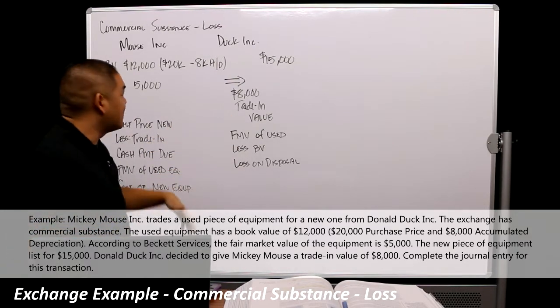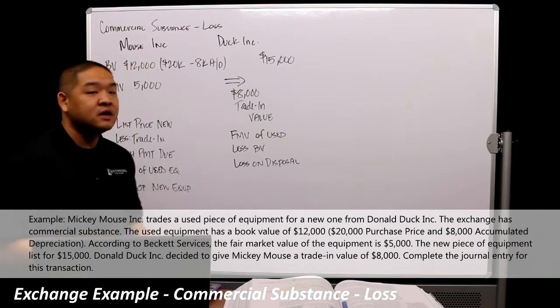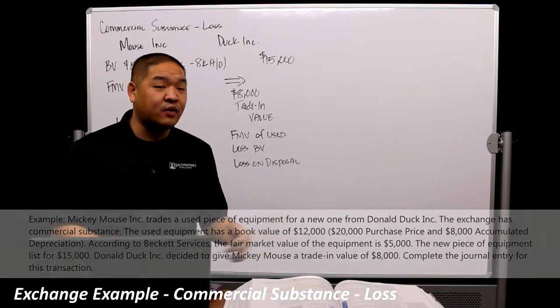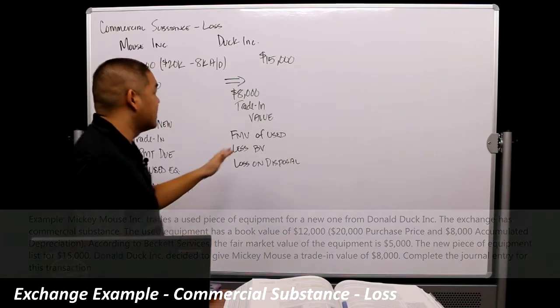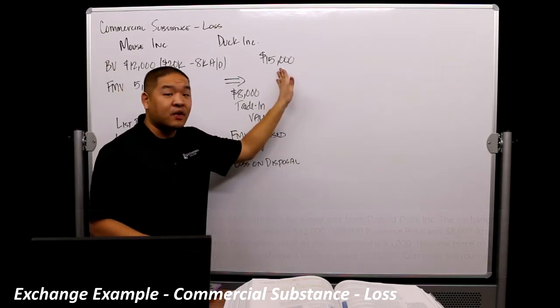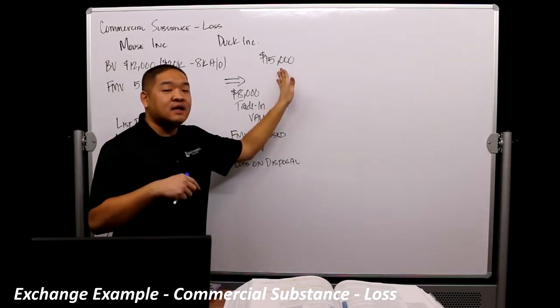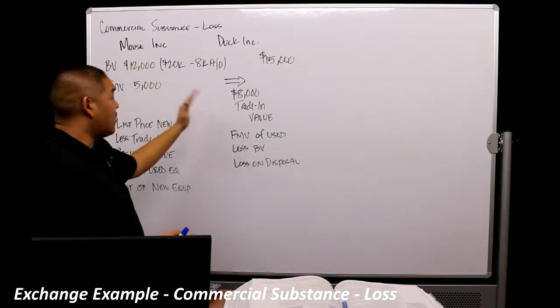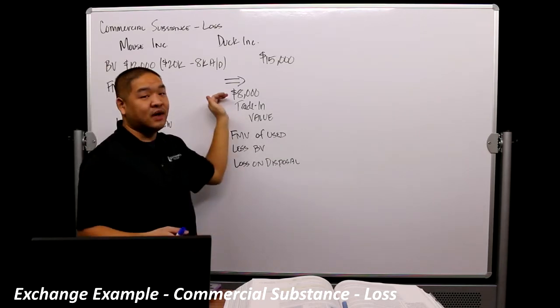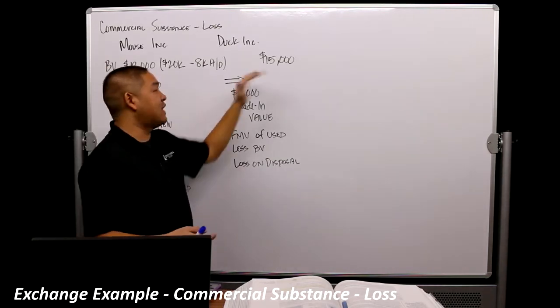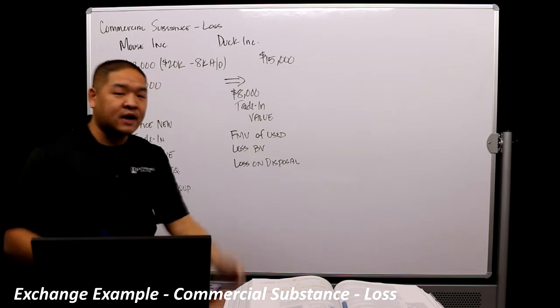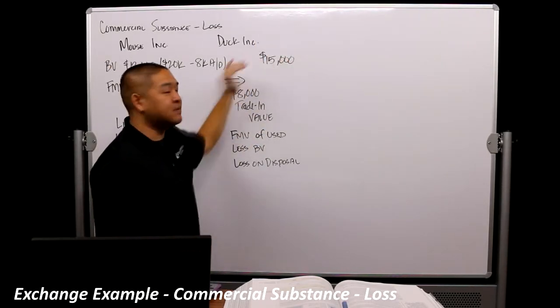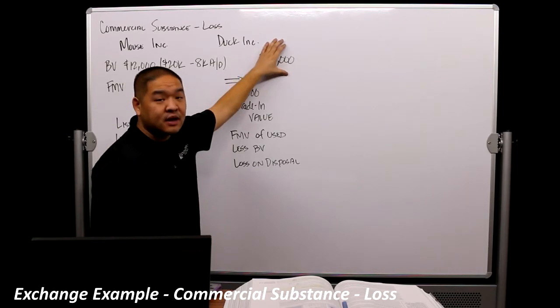Now, you might say, well, that stinks. Why would you do that? The reason why it might be more of a competitive marketing standpoint in that Donald Duck says, look, there's profit in here, a lot of profit. Let me make it a good enough deal where they go, hey, look, it's only worth $5,000. I can get $5,000 on the street or they can give me $8,000, but they'll only give me the $8,000 if I buy from them. So that's more of a marketing technique. There's profit here, so they're able to offset some of the loss here and the profit here.